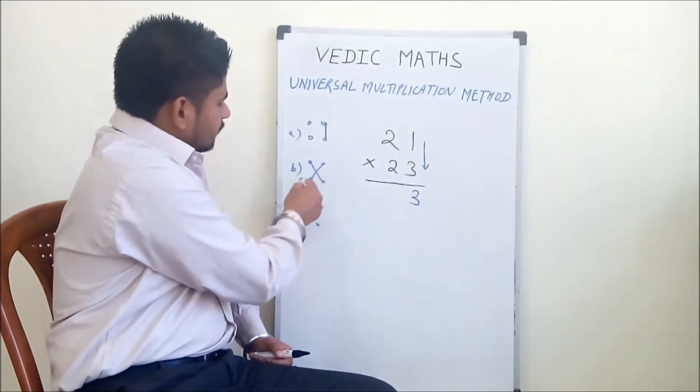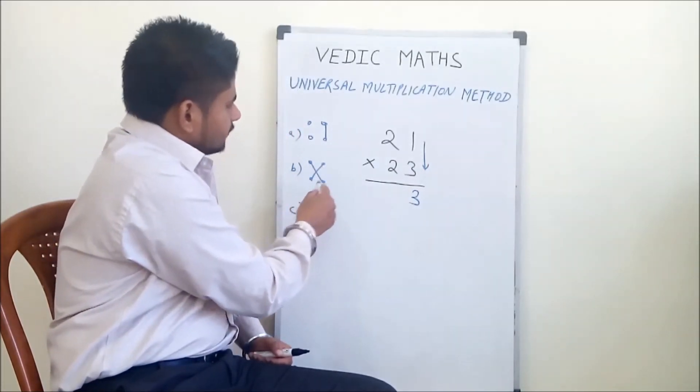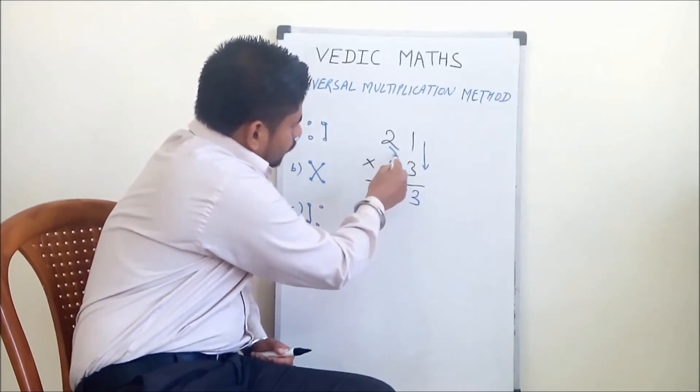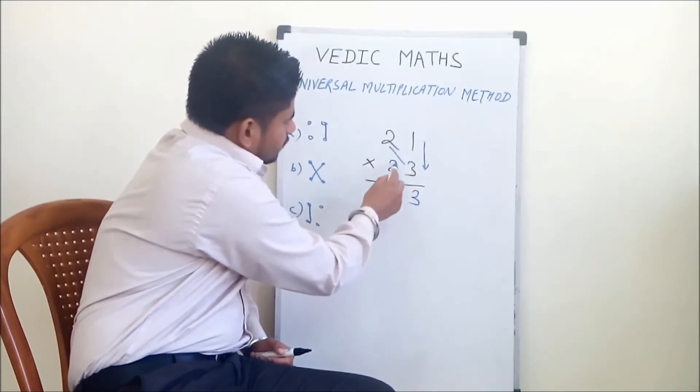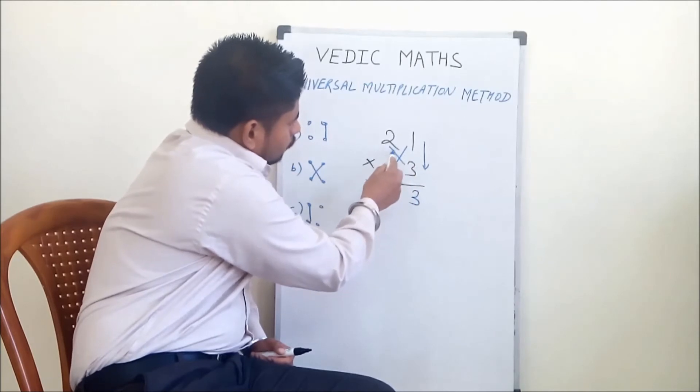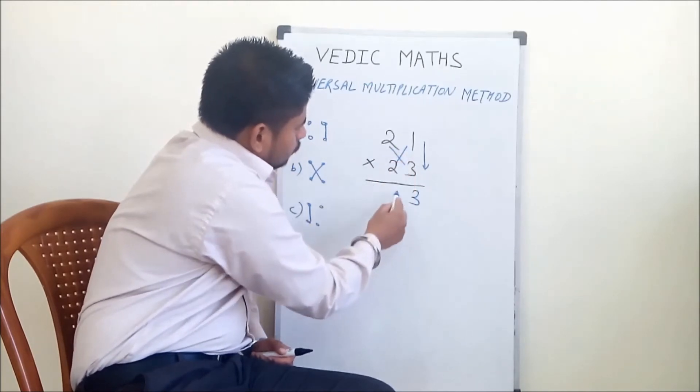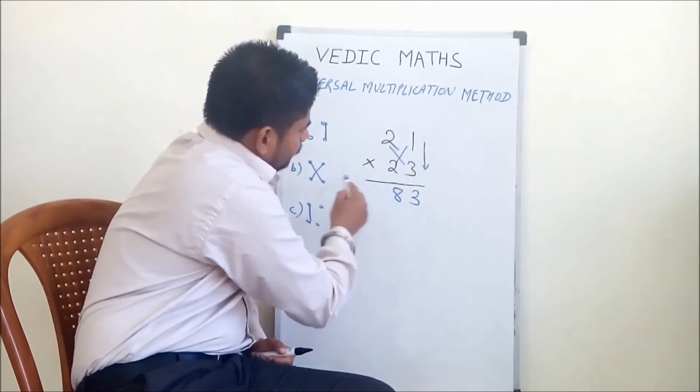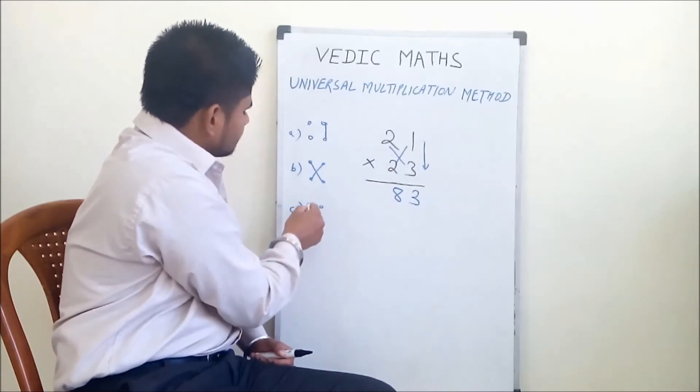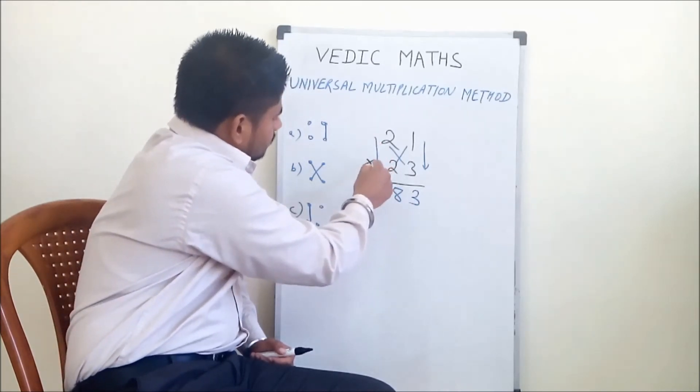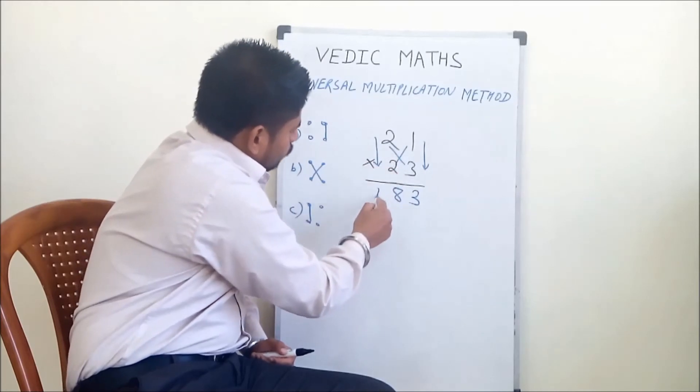And cross-wise, we multiply and add simultaneously. That is 2 into 3, 6 plus 2 into 1, that's 2. 2 into 3 is 6 plus 2, 8. And the third step we will vertically multiply, that is 2 into 2, 4.